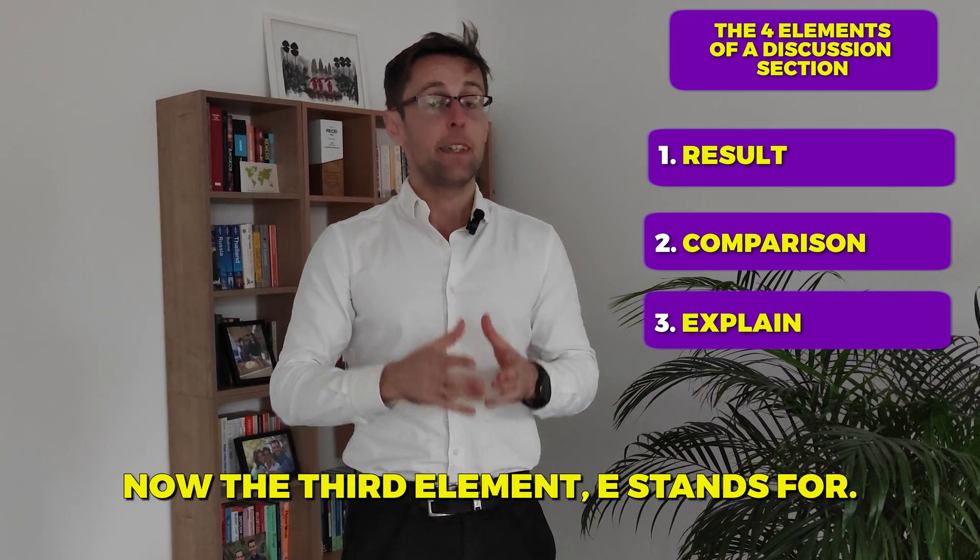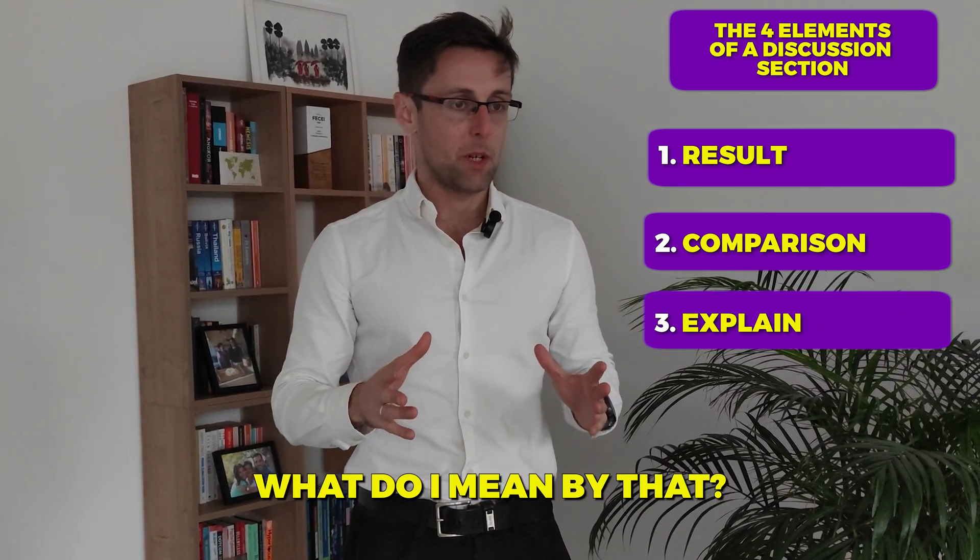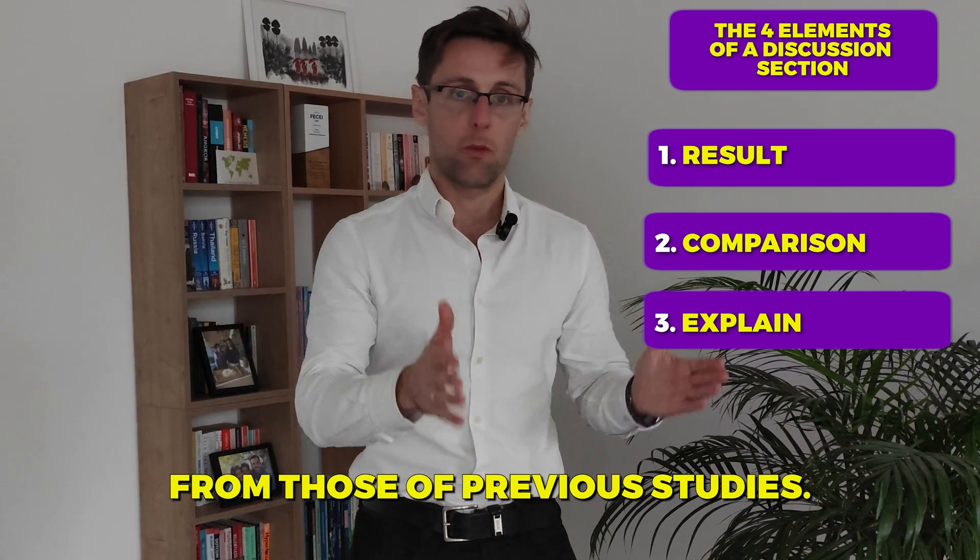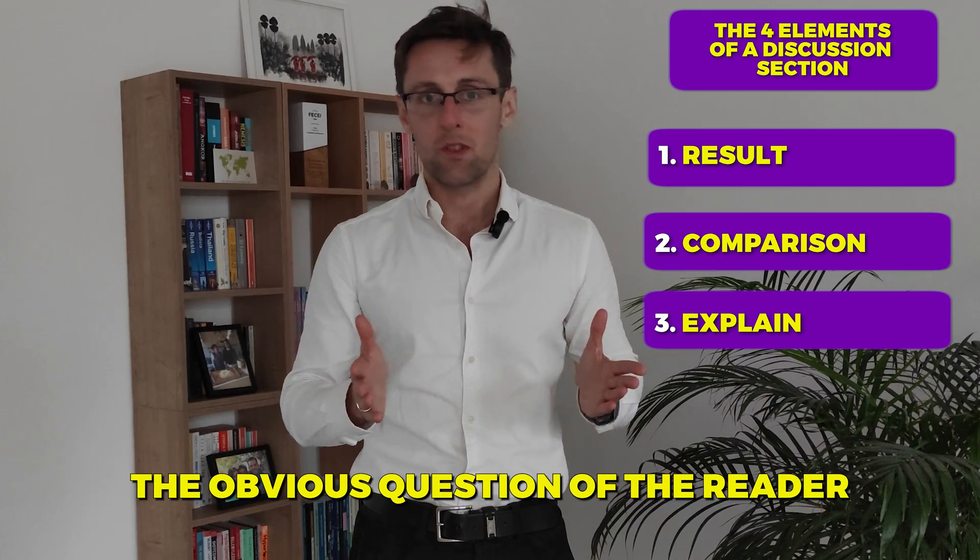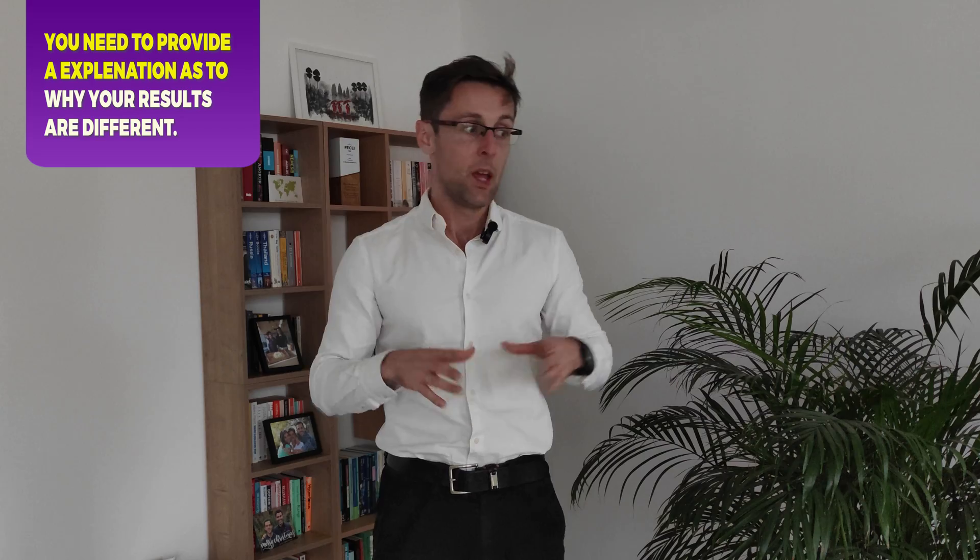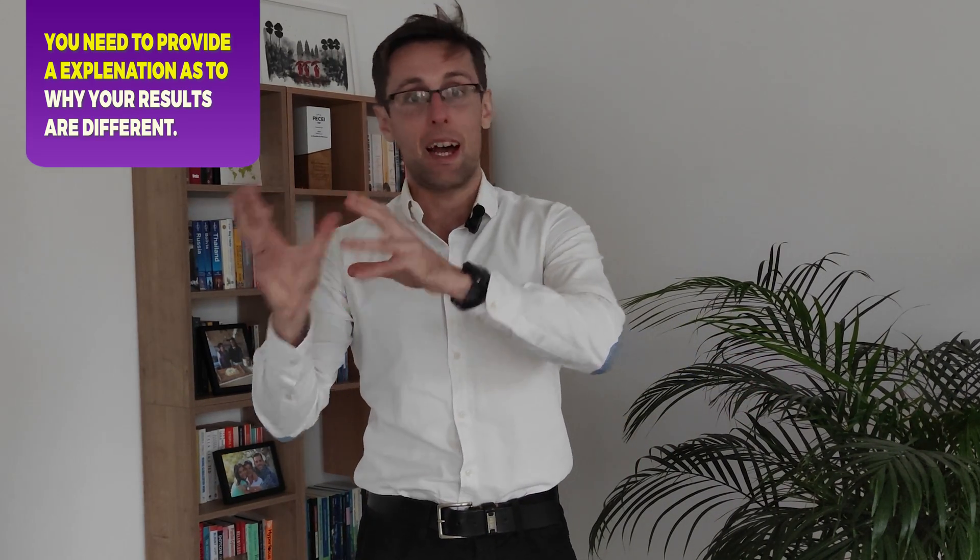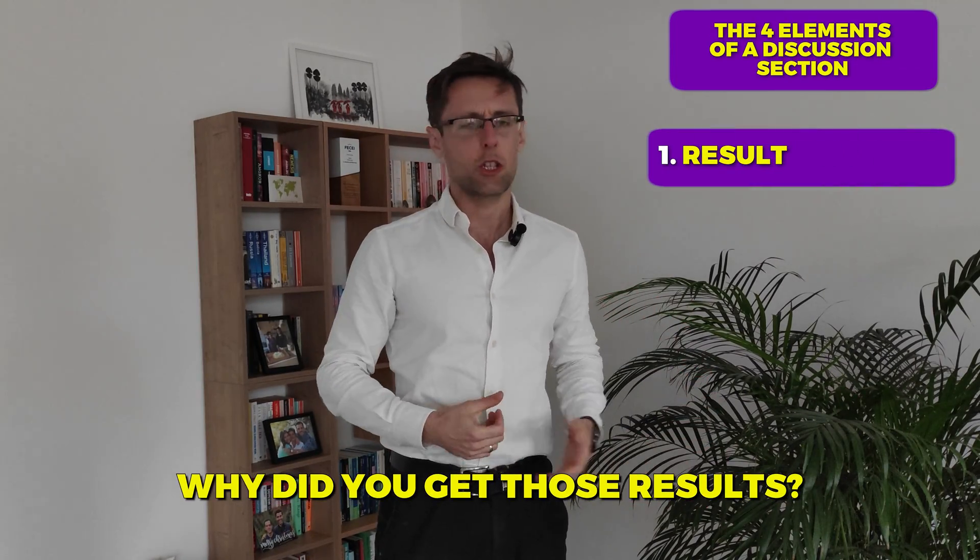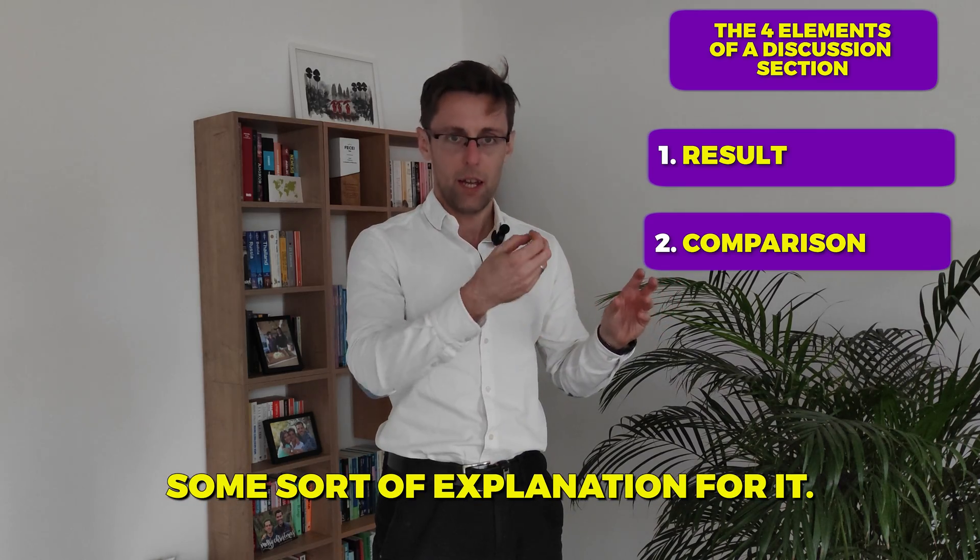Now, the third element, E, stands for explain. What do I mean by that? Imagine your results are different from those of previous studies. The obvious question that the reader is asking is why? Why are your results different? Tell me. That's what I mean by explanation. So you can say, one potential explanation of why these results are different is that we had a smaller sample size or whatever. So you want to provide some sort of logical explanation for these differences with literature. Also imagine that you've got some unexpected results that you simply did not predict. Again, the obvious question is like, why? Why did you get those results? And again, you want to provide some sort of explanation for it.